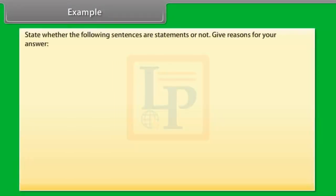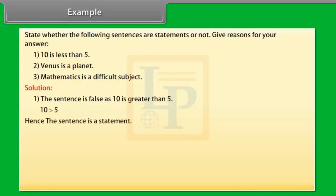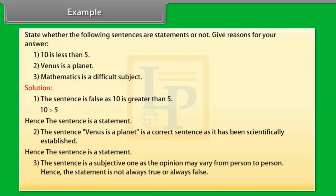Example: State whether the following sentences are statements or not, and give reasons. (1) 10 is less than 5. (2) Venus is a planet. (3) Mathematics is a difficult subject. Solution: The sentence '10 is less than 5' is false as 10 is greater than 5, hence it is a statement. 'Venus is a planet' is scientifically established, hence it is a statement. 'Mathematics is a difficult subject' is subjective and opinion may vary from person to person, so it is not a statement.